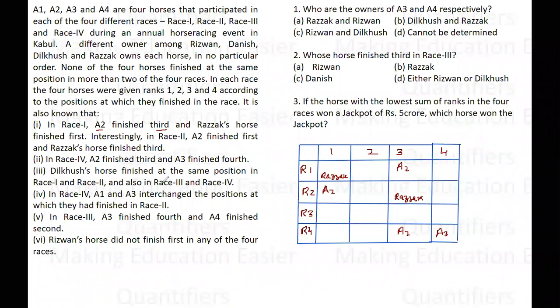Clue 3 says Dilkhush's horse finished at the same position in race 1 and race 2, and also in race 3 and race 4. So Dilkhush's horse finished in the same position in races 1 and 2, as well as in races 3 and 4. We still do not know which horse belongs to Dilkhush.